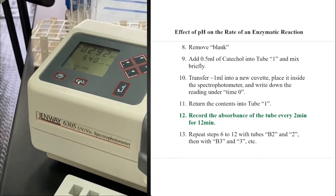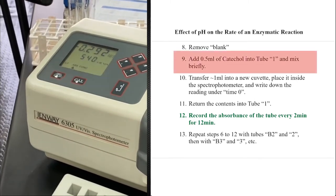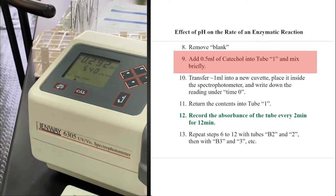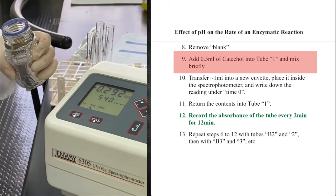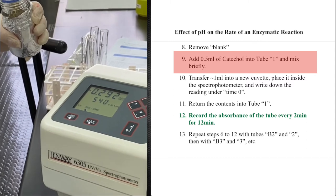We will add 0.5 ml of catechol to the experimental test tube, and we will start our readings as fast as possible.